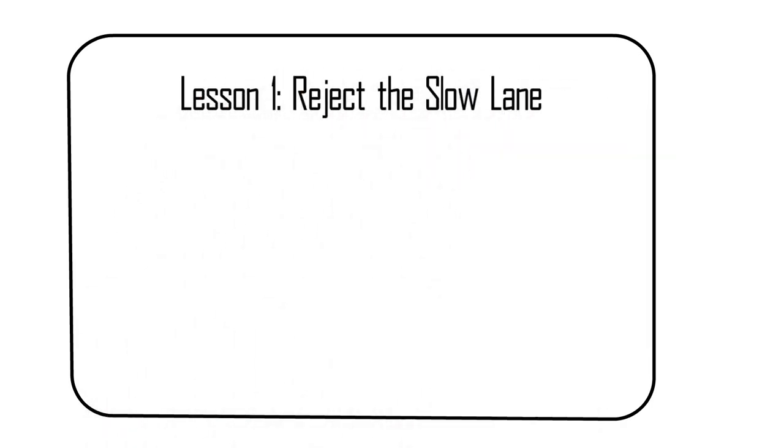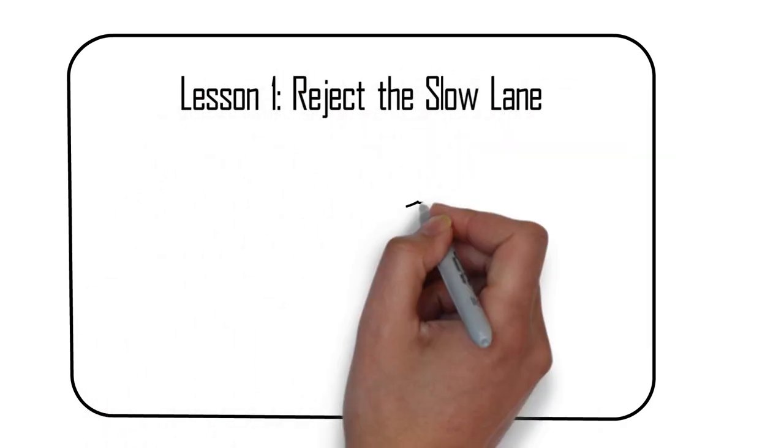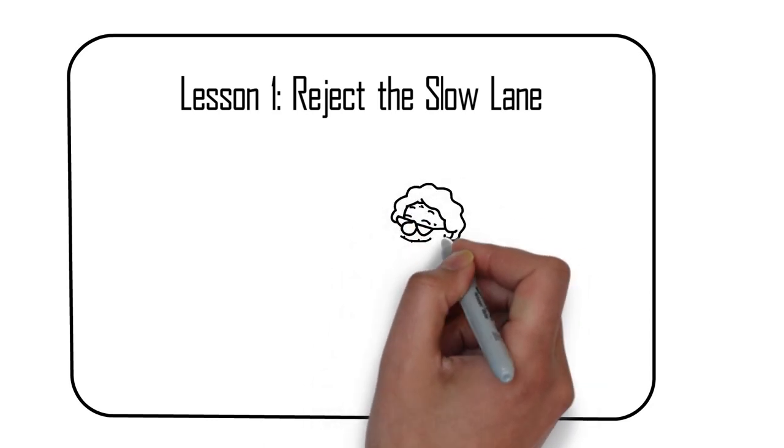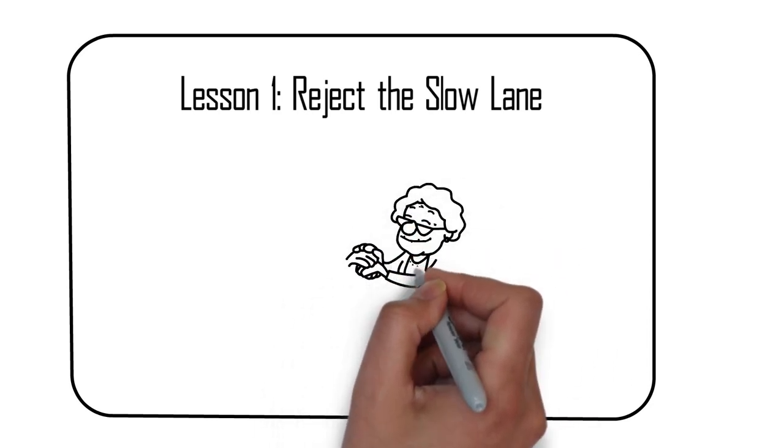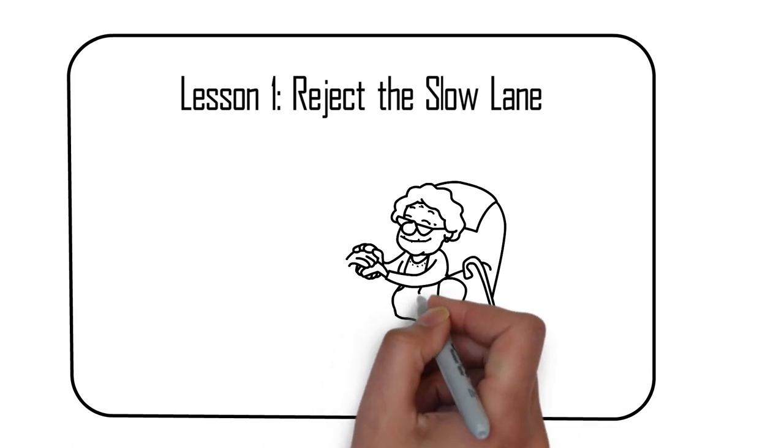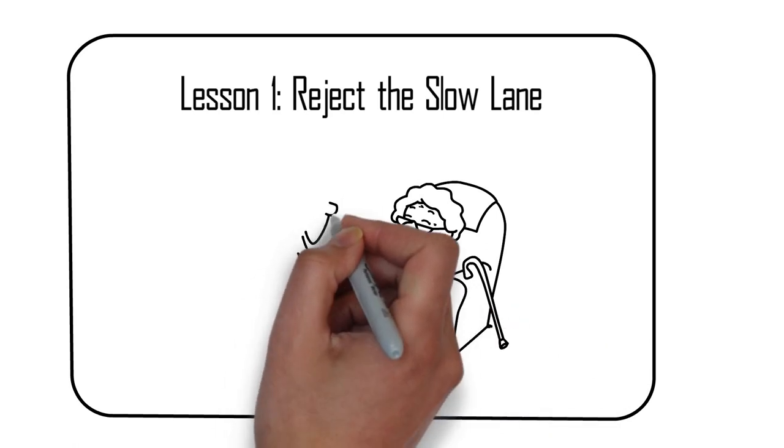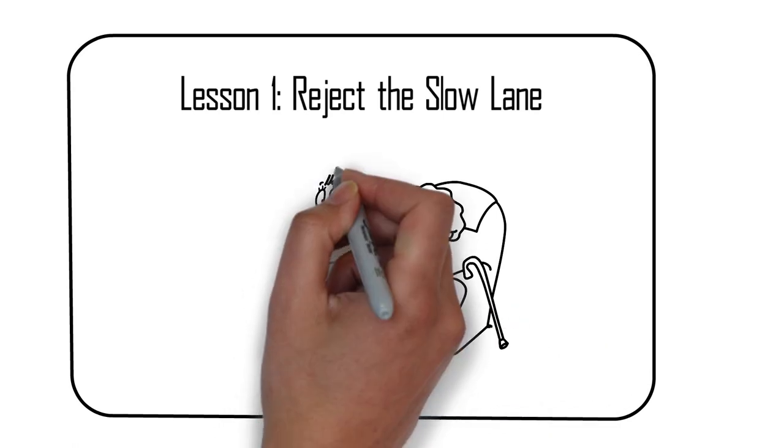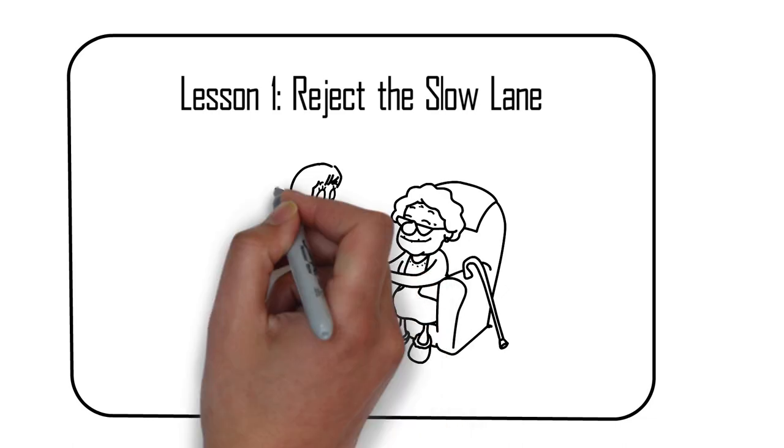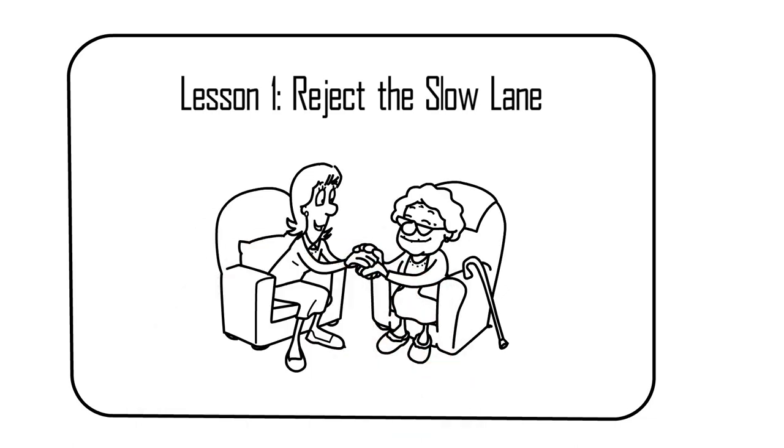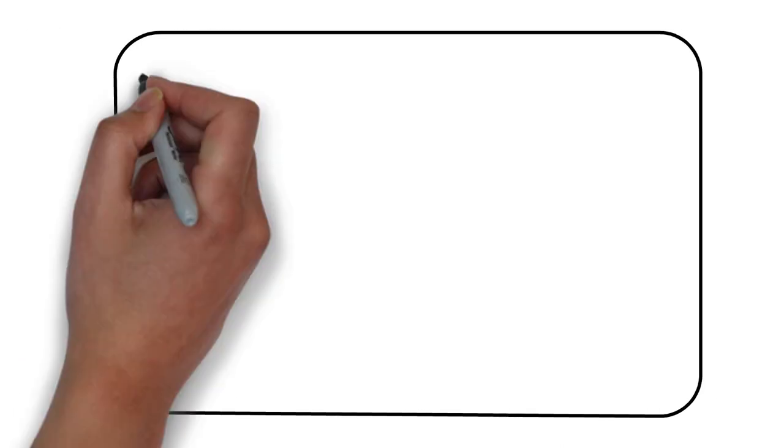Lesson 1: Reject the slow lane. The first lesson is to reject the traditional concept of the slow lane. This is the idea that you can achieve wealth by following a conventional career path, saving and investing a portion of your income and waiting decades to achieve financial freedom. DeMarco argues that this approach is slow and unreliable and that there are better ways to achieve wealth.